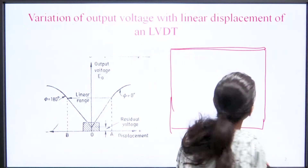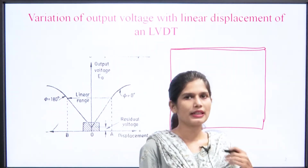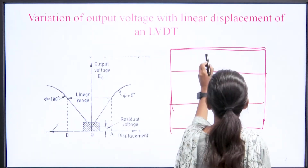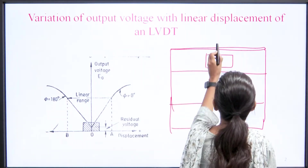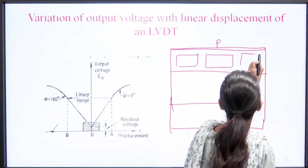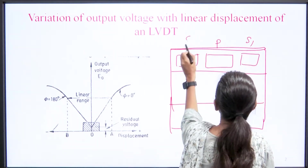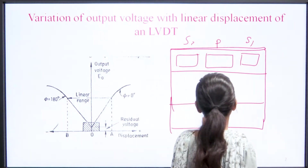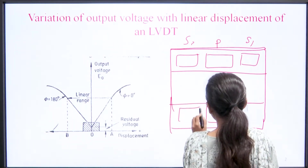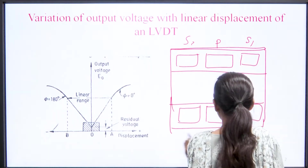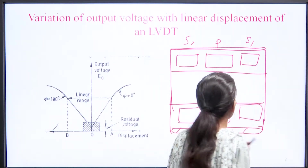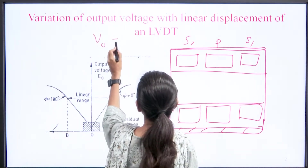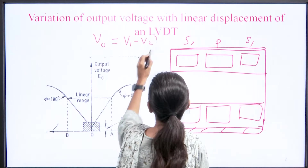There is one primary winding and two identical secondary windings placed in the LVDT. The number of turns in both secondary windings are equal. Their positions are such that one is added in a clockwise and the other in an anti-clockwise direction, so that the output voltage we get is in net difference form — that is V1 minus V2.